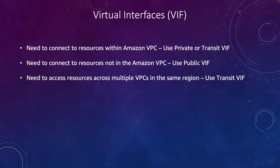To summarize: if you need to connect to resources within Amazon VPC you use private or Transit VIF. If you need to connect to resources which are not part of Amazon VPC, like S3, DynamoDB, or Lambda, then you can use public VIF. And if you have multiple VPCs in the same region where you need to connect to an on-prem environment, then you should use Transit VIF, because if you use private VIF you need one VIF for each VPC.